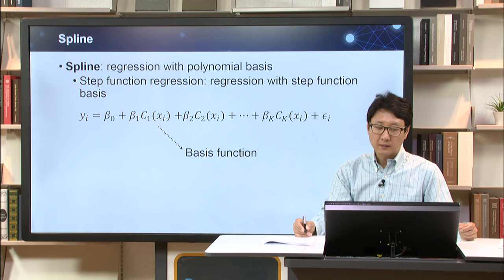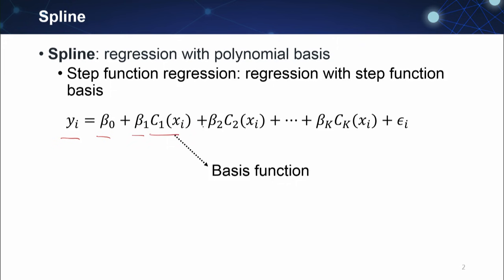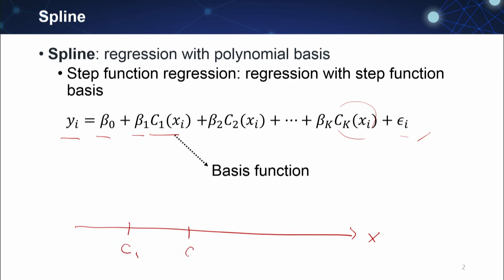Mathematically, it is expressed like this. y is equal to beta 0 plus beta 1 c1 plus beta 2 c2 and so on up to ck. Each c1, c2, and ck mean the regression function for each of the bins. In a similar way with the step function regression, spline also first cuts the whole range of x into several bins using cut points c1, c2, c3, c4. So let's think about we have five bins with four cut points. Within each bin,